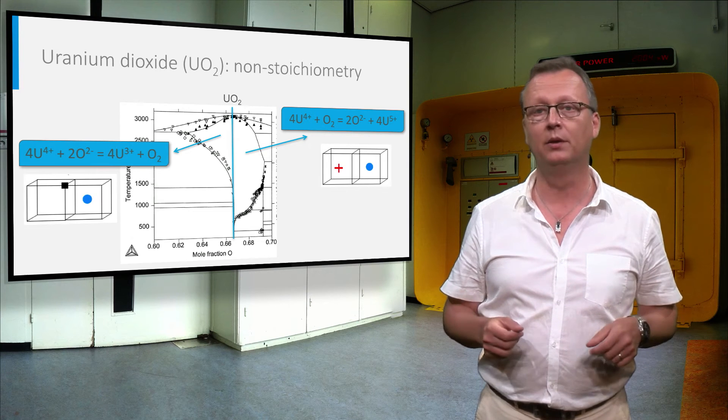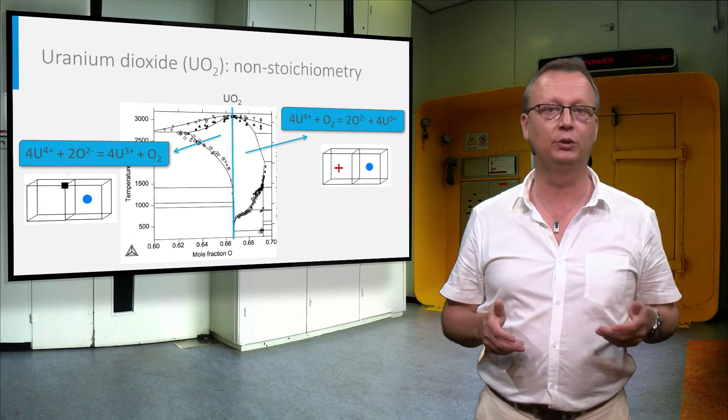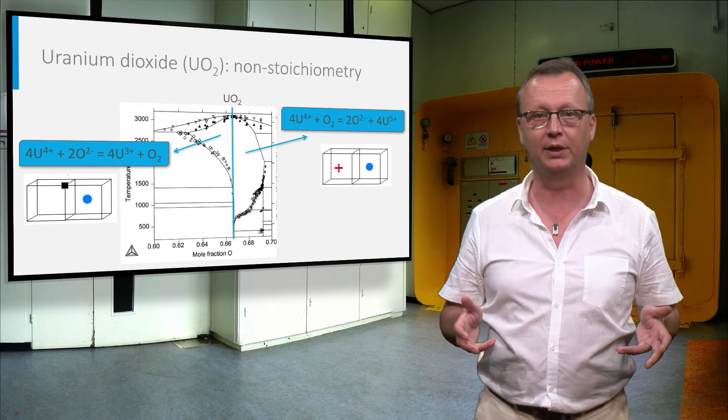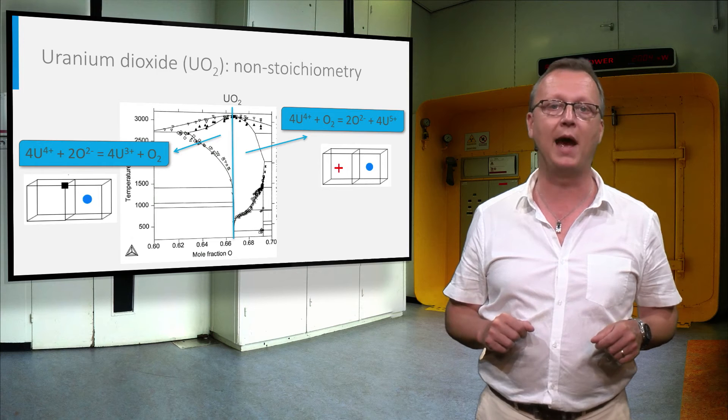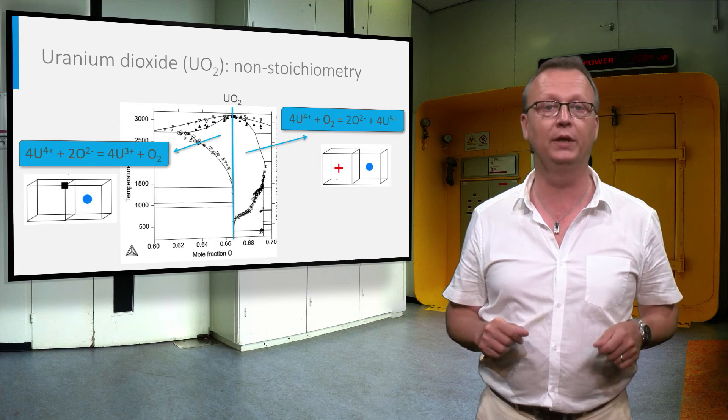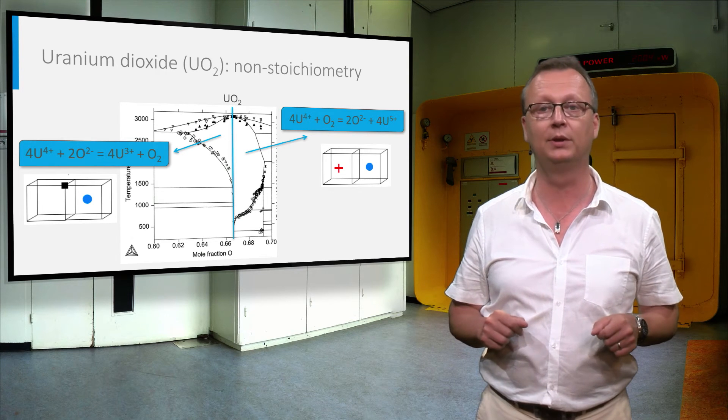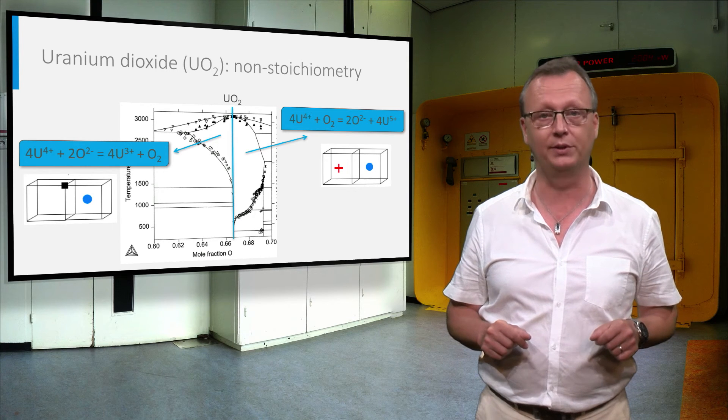In the same way, uranium can be reduced to +3, accompanied by the creation of a vacant oxygen position in the crystal lattice, indicated by the black square, and so forms a hypostoichiometric compound. This means that UO2 can have a very large deviation from the stoichiometric composition at high temperature, which has a significant effect on its properties.